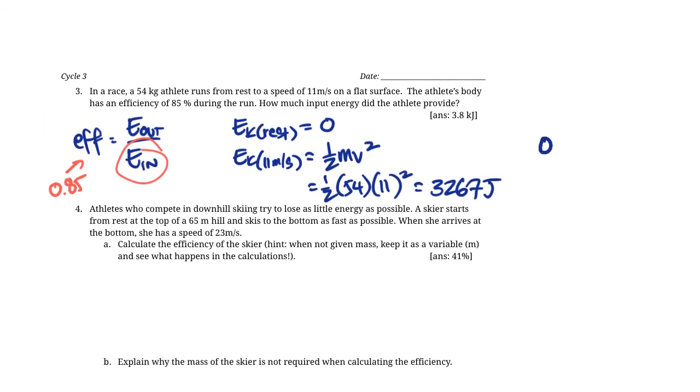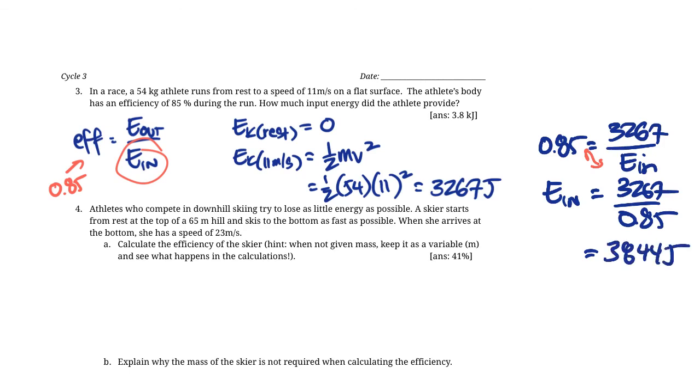We know the efficiency is 0.85, and it equals energy out, which is 3267, over energy in. Solving for energy in, we can say energy in equals 3267 over 0.85. That's 3844 joules to two significant digits. We can turn it into kilojoules, 3.8 kilojoules.